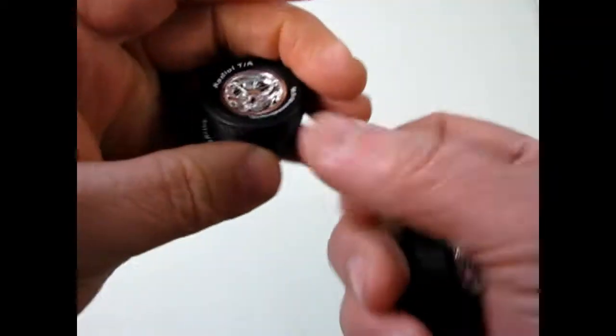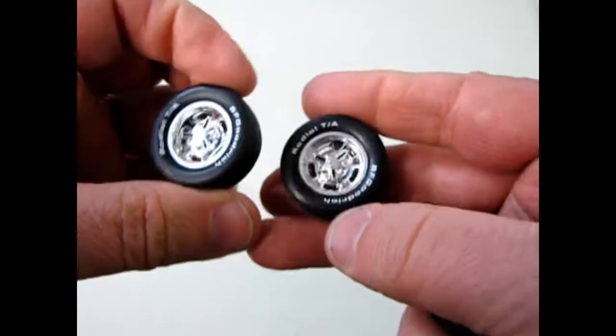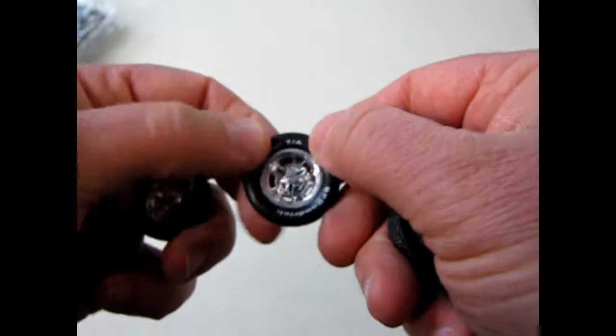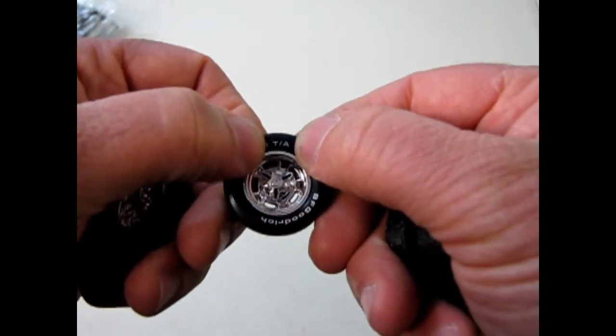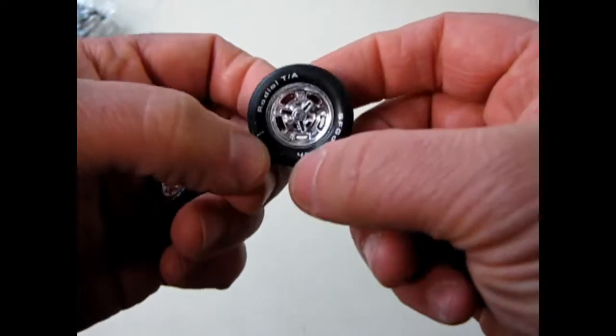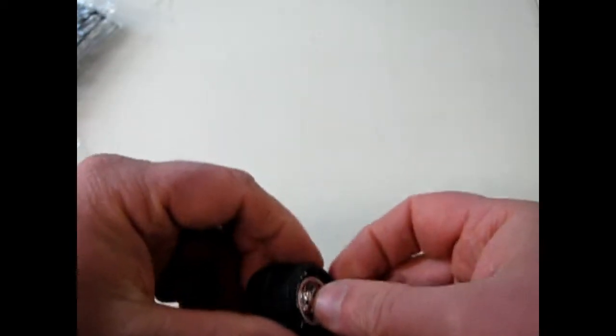I always liked the 70s Radial TA. It had a white wall that went all the way around except for where it says TA. I don't know if you guys remember those. Those are going quite back to like 1976 type of era.